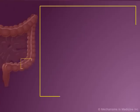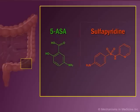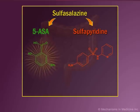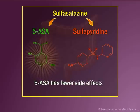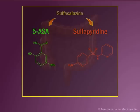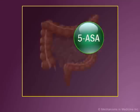Sulfasalazine exhibits anti-inflammatory properties when split by gut bacterium into its metabolites, sulfapyridine and 5-ASA, or mesalamine. The anti-inflammatory benefits of sulfasalazine are chiefly derived from 5-ASA, which has fewer side effects than sulfapyridine. As such, administration of 5-ASA alone may be preferred over sulfasalazine.